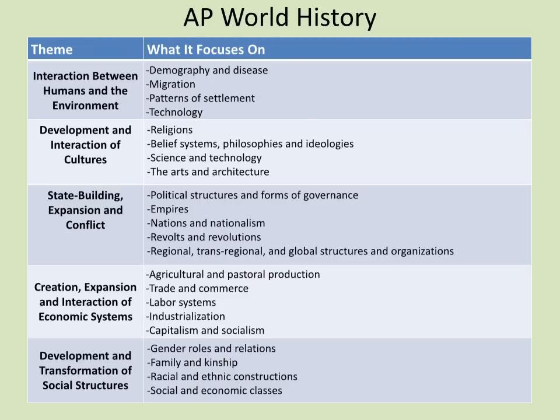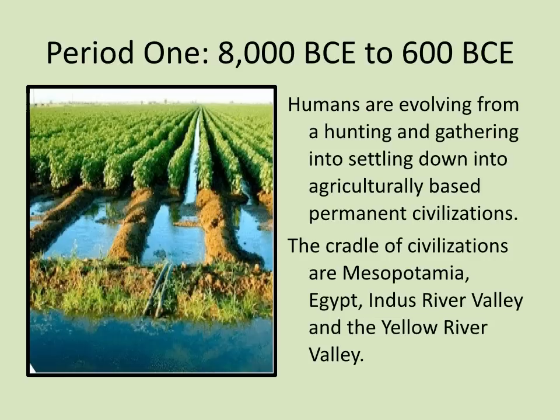Period one is 8,000 BCE to 600 BCE. In this stage, humans are evolving from hunting and gathering into agriculture, which allows for more permanent, settled civilizations. Our foundation of civilization is Mesopotamia, Indus River Valley, and Yellow River Valley. Keep in mind the Mesopotamians are our first civilization. We also have the Phoenicians in there, who are going to be great traders. The River Valley is going to be our Chinese, and the Indus is our South Asia or India.